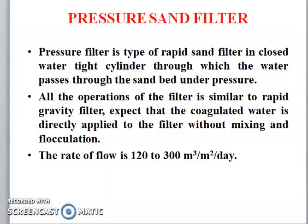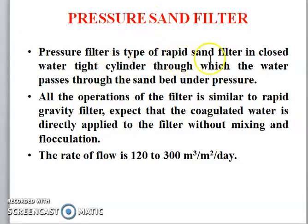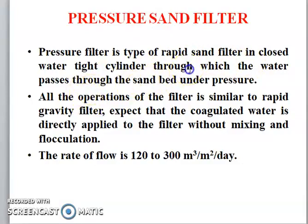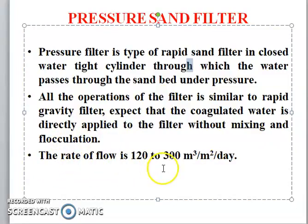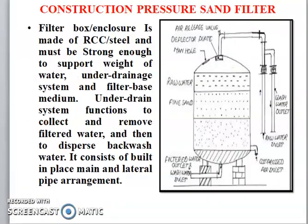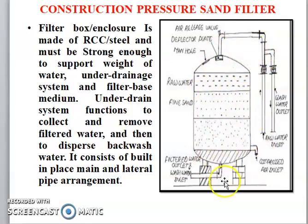Now we go for the pressure filter. Pressure filter is a type of rapid sand filter enclosed in a water-tight cylinder through which water passes through the sand under pressure. All operational aspects are similar to the rapid filter, except the coagulated water is directly applied to the filter without prior coagulation mixing. The rate of flow is 120 to 300 cubic meters per square meter per day. Construction of the pressure filter includes a sand layer, fine sand, aggregate, and coarse aggregate — it is a drum or cylinder type filter that works under pressure.